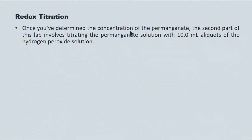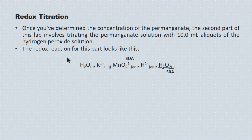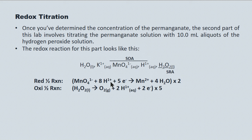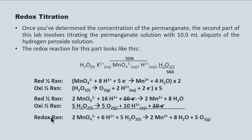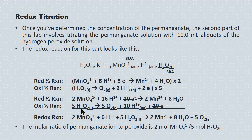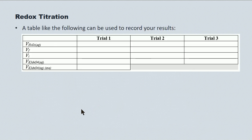Once we determine the concentration of the permanganate, the second part of the lab is to titrate it with 10.0 mL aliquots of the peroxide solution. To determine the redox, we follow the same procedure: list all species present, identify the strongest oxidizer and the strongest reducer. The permanganate goes to reduction; the peroxide goes to oxidation — we flip this equation from the data booklet. We use multipliers to balance the electrons, giving the overall redox reaction. The stoichiometry between the peroxide and the permanganate is 5 to 2. We use a table to record experimental results, and we'll determine an average volume for the permanganate.